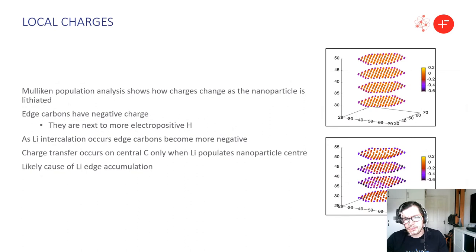To prove why this was occurring one of the methods that we did to analyze our structure was to analyze the local charges so we used something called Mulliken population analysis which shows how the charges change as the nanoparticle is lithiated on individual atomic sites. Here we show just the carbons displayed on the right here and we can see that the edge carbons have a slightly electronegative charge.